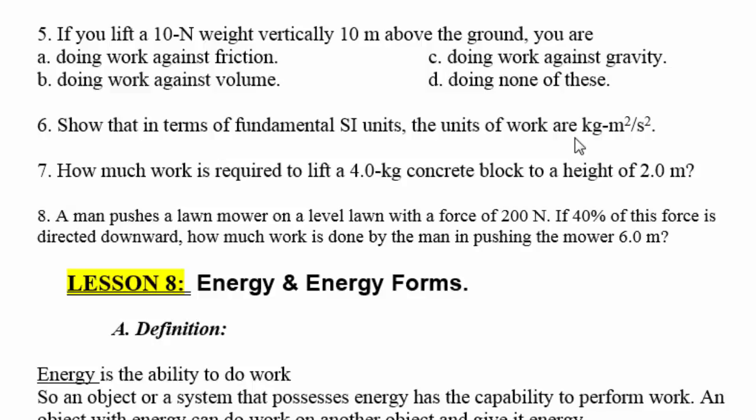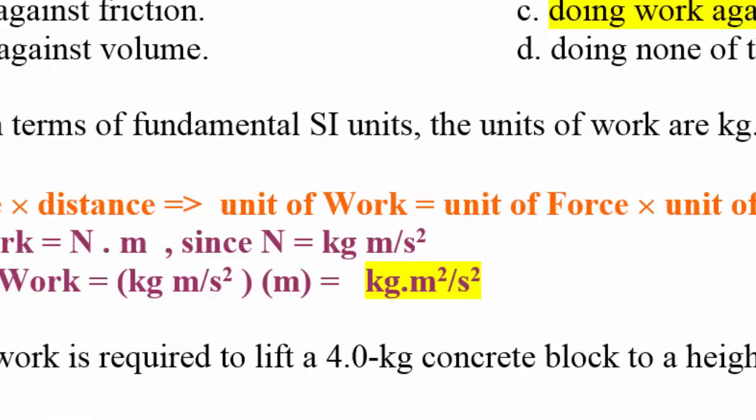Since work is force times distance, the unit is: kilogram·meter per second squared (the unit of force) times meter (the unit of distance), which gives kilogram·meter² per second squared — as shown in the solution.